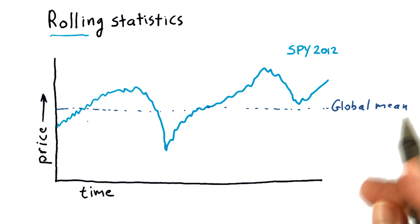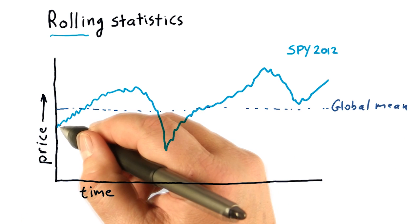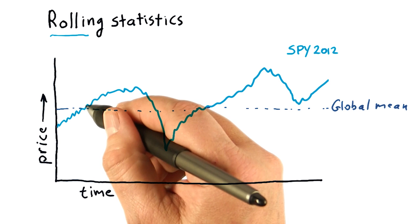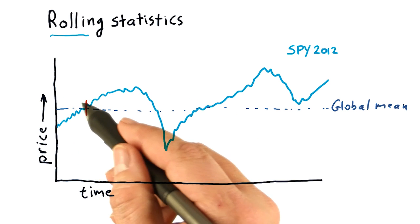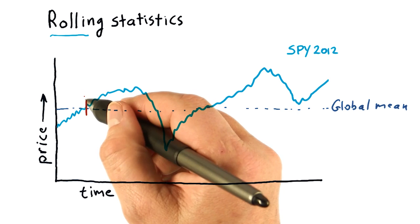Let's suppose we're going to take a 20-day rolling mean. 20 days, right about here, and then we take the mean of all that data behind us.